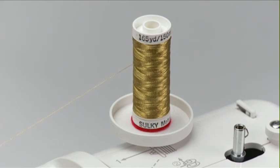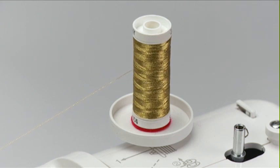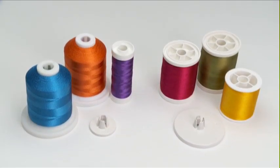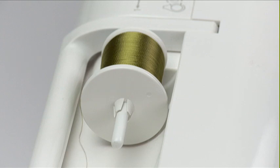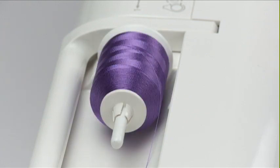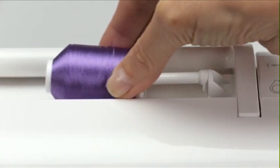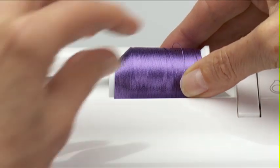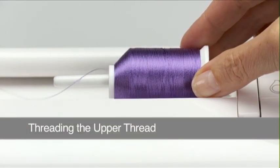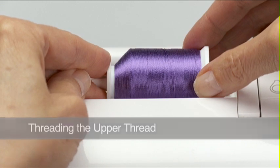Use the spool pin and base so these threads don't get caught underneath the spool. Use the spool pin that suits the style of thread spool you are using for your project. Place a spool of thread on the spool pin with the thread coming off the spool like this, and set it firmly in place with a spool holder.